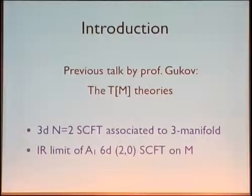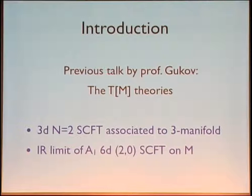There is this nice class of theories associated to 3-manifolds. These are three-dimensional superconformal field theories with N=2 supersymmetry, and they are defined as the infrared limit of a compactification of the six-dimensional theory — for this talk, just an A1 theory — compactified in some twisted way on this 3-manifold.